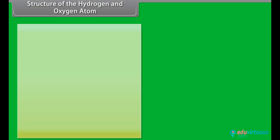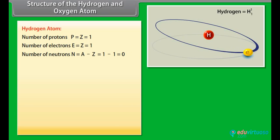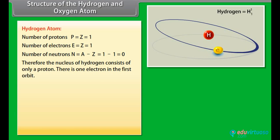Structure of the Hydrogen and Oxygen Atom. Hydrogen Atom: Number of protons P is equal to Z is equal to 1. Number of electrons E is equal to Z is equal to 1. Number of neutrons N is equal to A minus Z which is equal to 1 minus 1 which equals 0. Therefore, the nucleus of Hydrogen consists of only a proton. There is one electron in the first orbit.